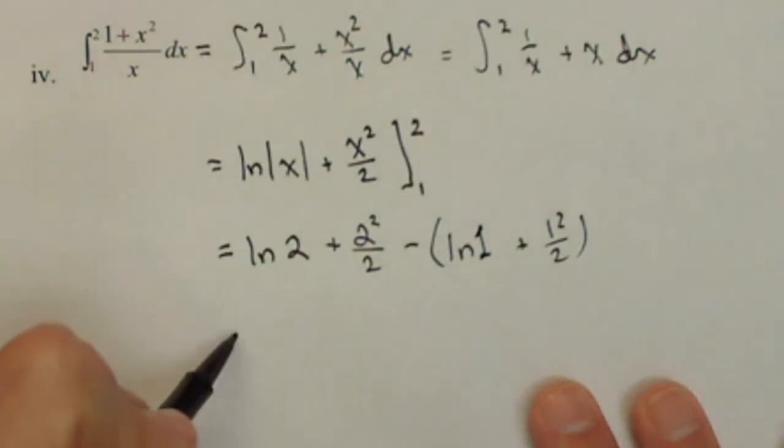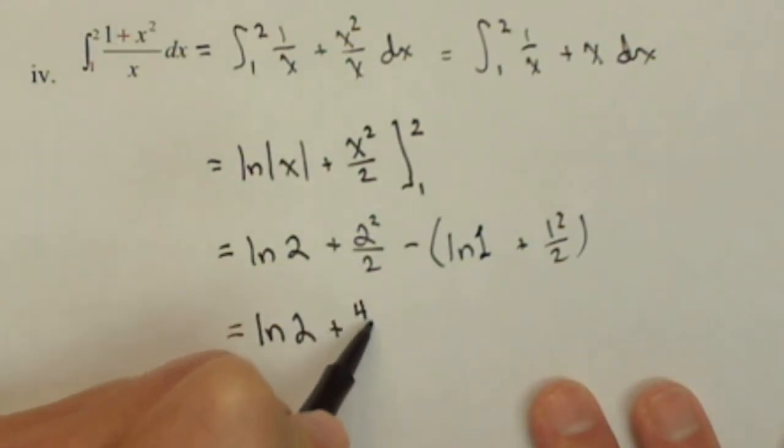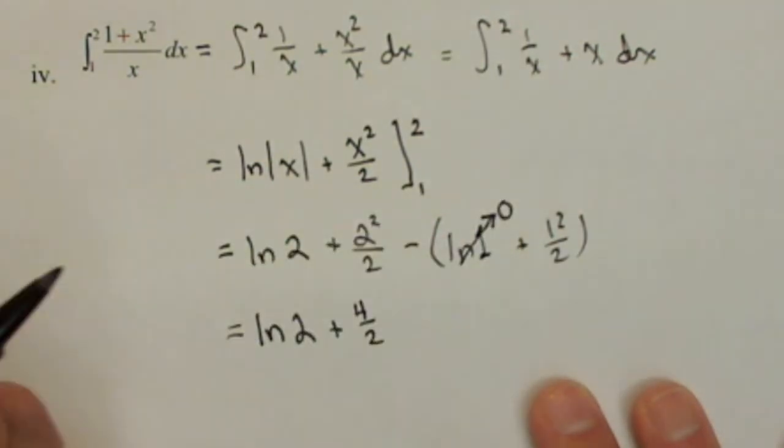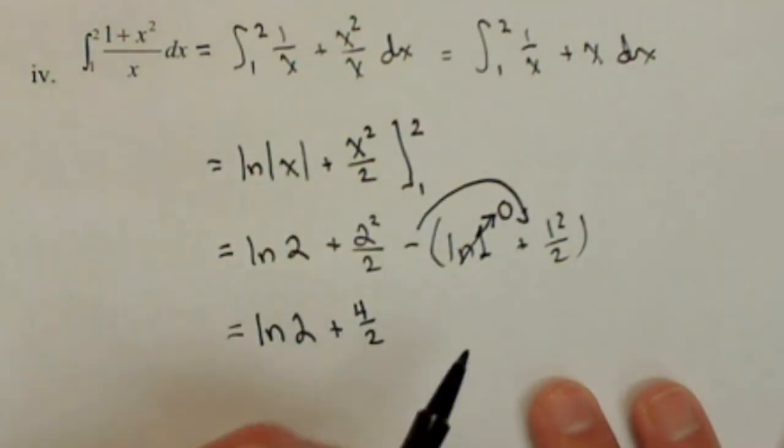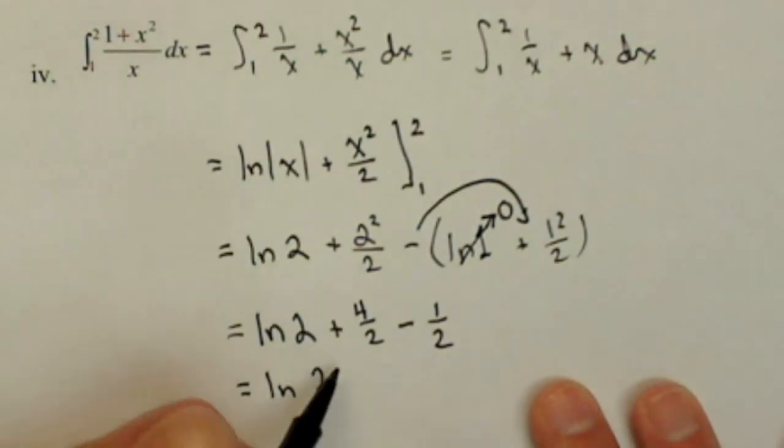So we'll see if we can simplify this a little bit. There's not going to be much we can do. ln of two. Here we have four halves. ln of one is just equal to zero, but we do have to distribute that negative sign, which is where the parentheses were helpful. So minus one half. So I get ln of two plus three halves.